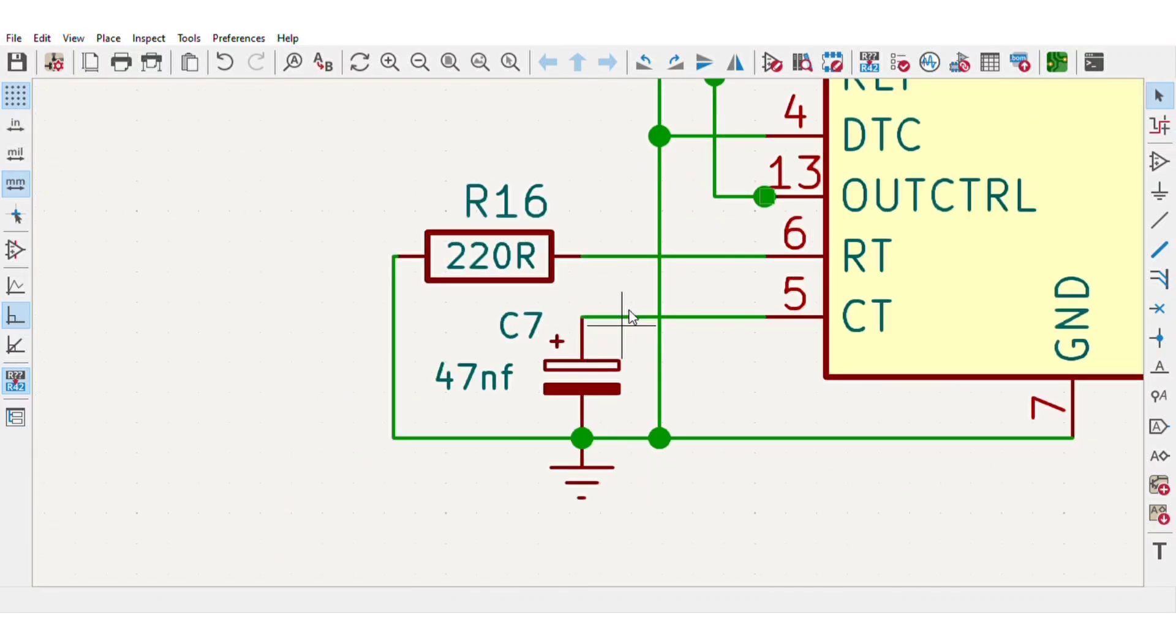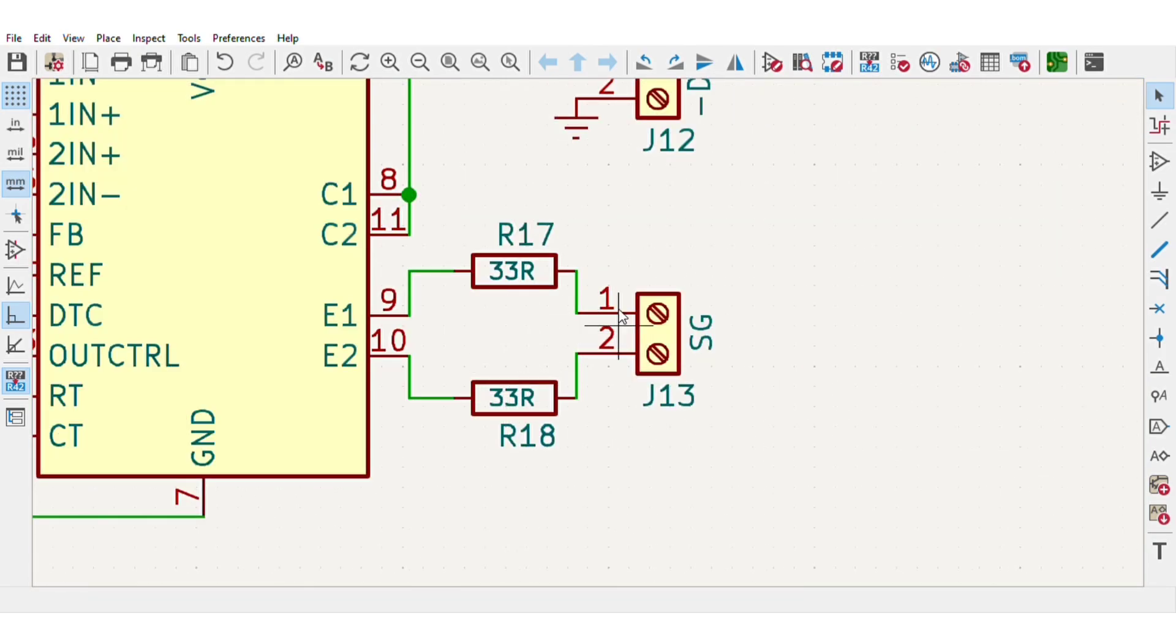And here on pin 5 I used a 47 nF capacitor, and on pin 6 I used a 220 ohms resistor. These both are responsible for setting frequency and duty cycle. And from pin 9 and 10 we get output through